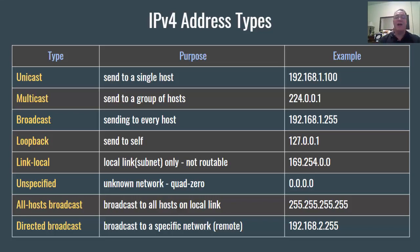Let's take a look at these different IPv4 address types. These are all different types of addresses in an IPv4 addressing system. A unicast address is sent to a single host. An example address is 192.168.1.100 — this is a single host address.